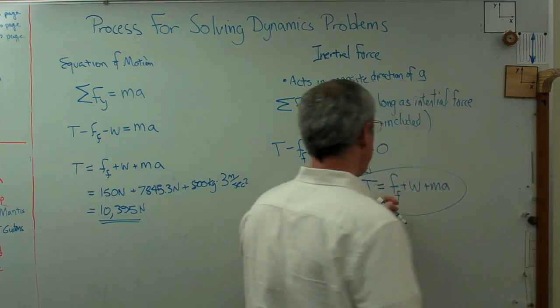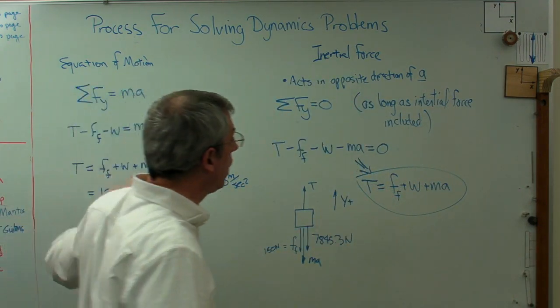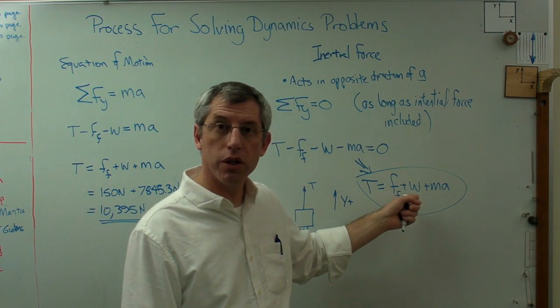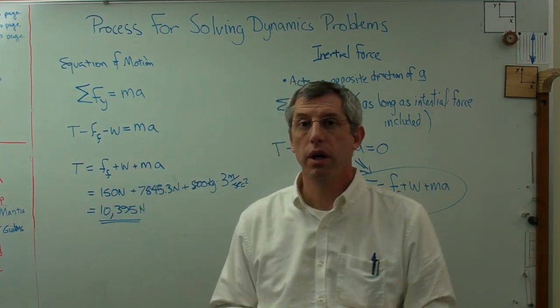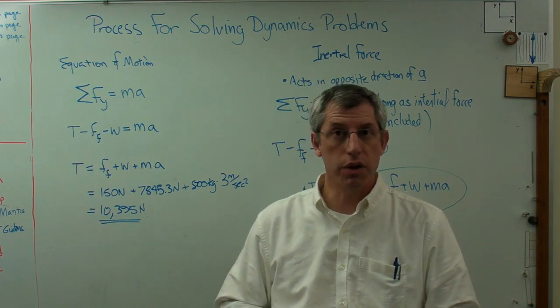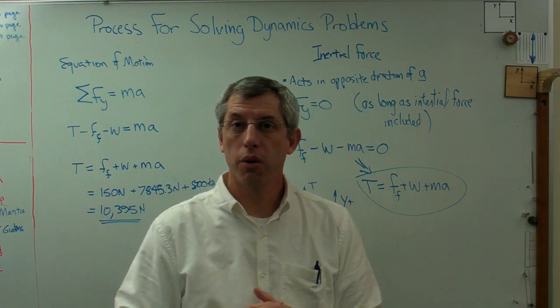So it's a very simple step to say that T equals F friction plus w plus ma. Well, that equation right there sure looks an awful lot like that one right there. I get the exact same equation using inertial force as I do using Newton's laws. They're equivalent to one other. They give you the same answer, and as long as you apply the inertial force idea correctly, it'll work just fine.